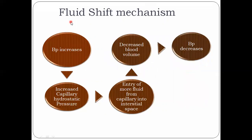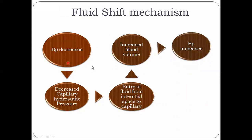The next mechanism is the capillary fluid shift. When blood pressure increases, capillary hydrostatic pressure increases, causing more fluid from the capillary to enter the interstitial space, decreasing blood volume and lowering blood pressure. The exact opposite happens when blood pressure decreases: capillary hydrostatic pressure falls, fluid from the interstitial space re-enters the capillary, increasing blood volume and raising blood pressure.